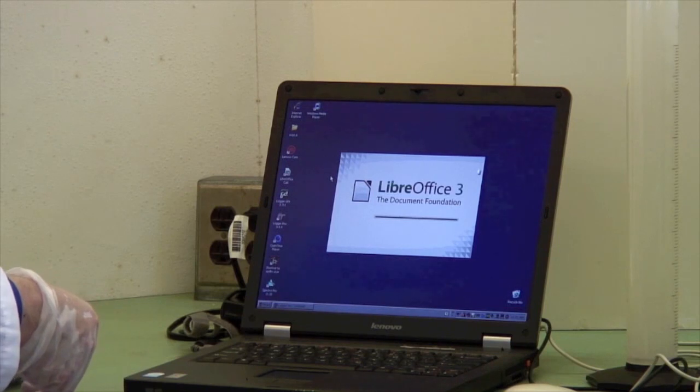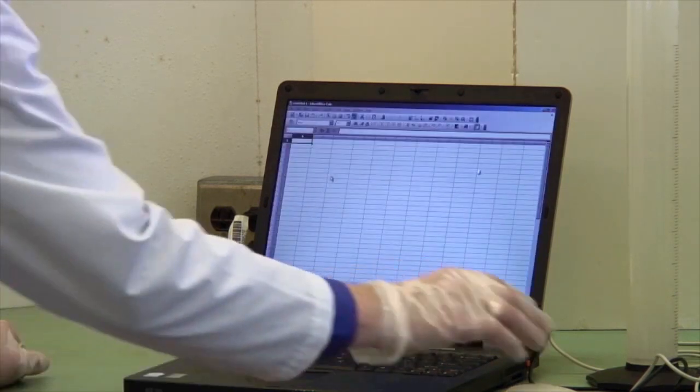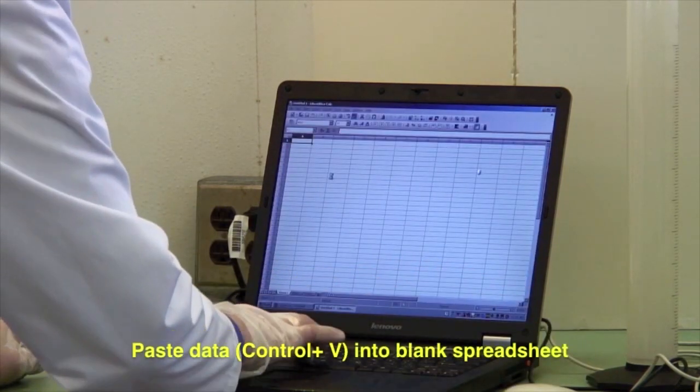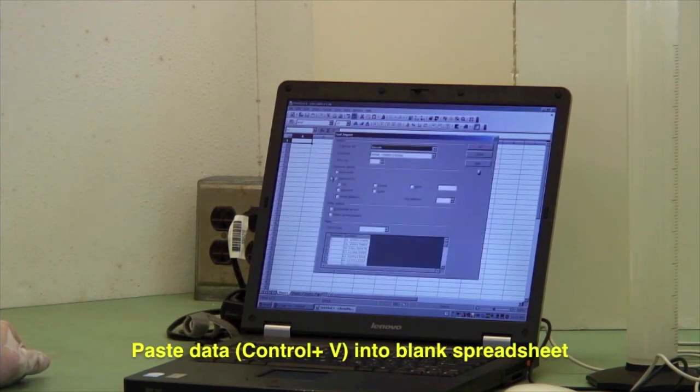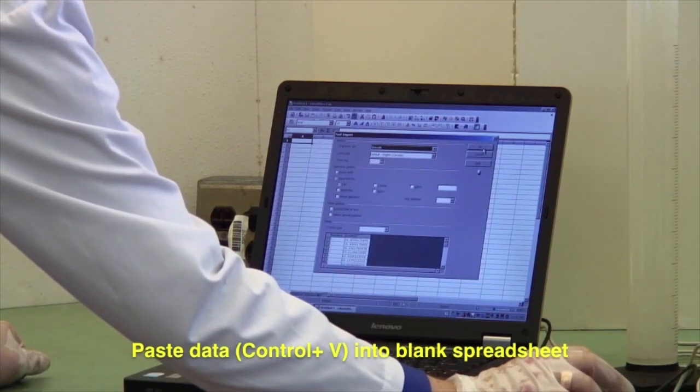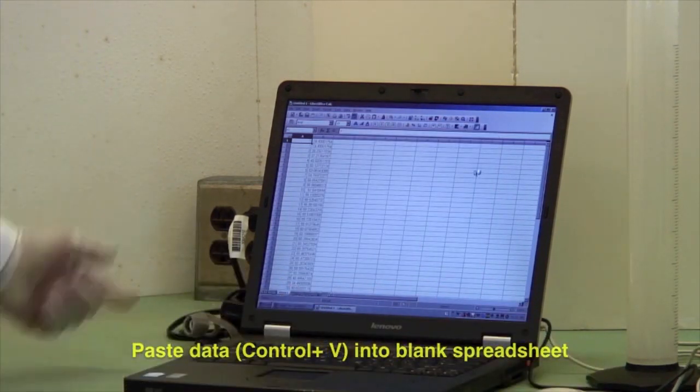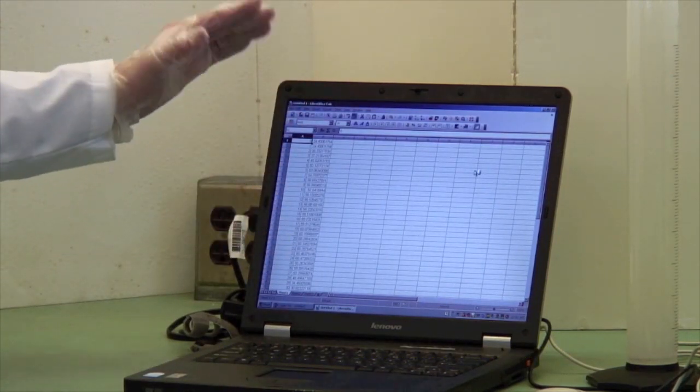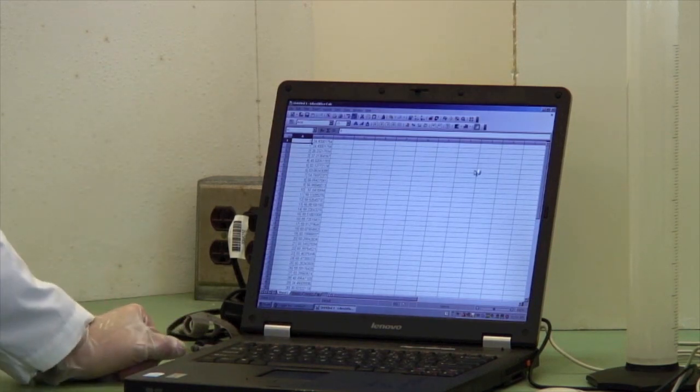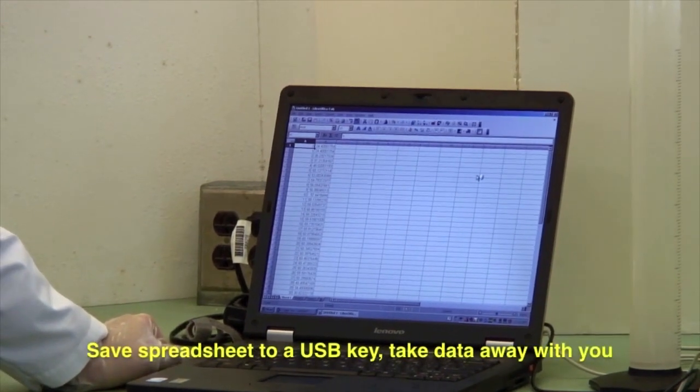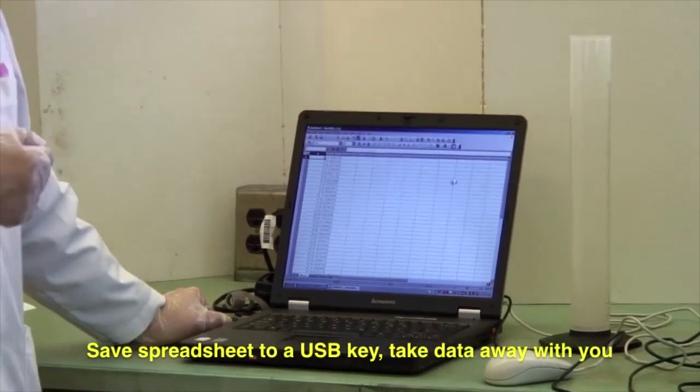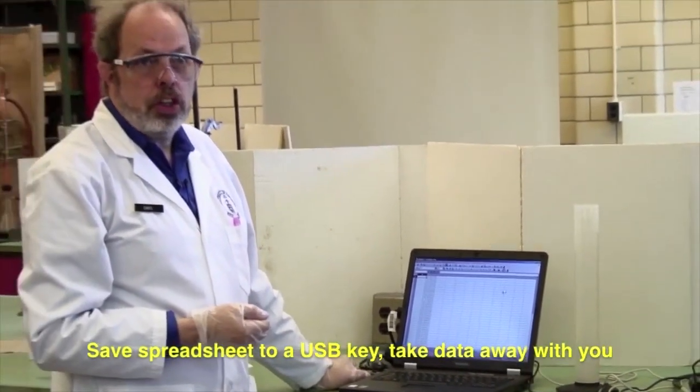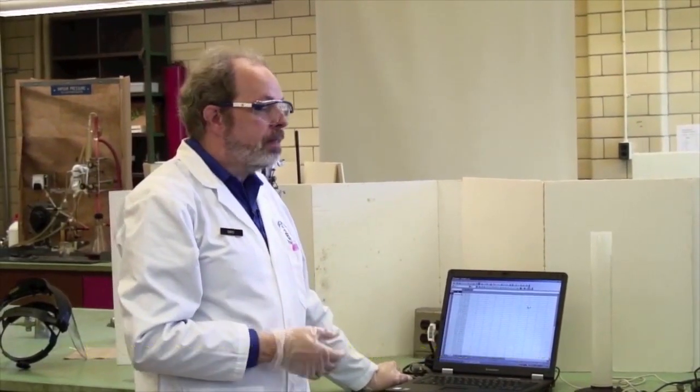Control V. And there we have temperature as a function of time. And you can save this and eventually export it into a USB key that you can then take home and crunch the numbers with. So that's it for calibrating the calorimeter.